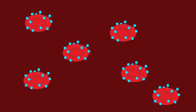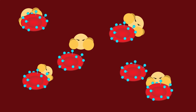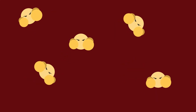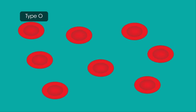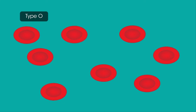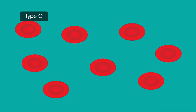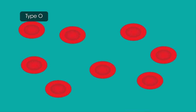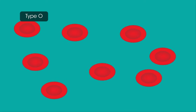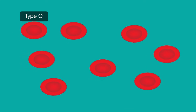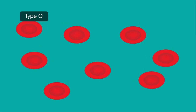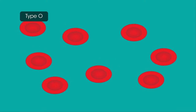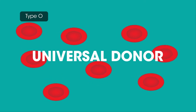Antigens trigger an immune response in which your body tries to get rid of them as it thinks they're foreign and bad. Because blood type O doesn't have any antigens on its surface, this means that when type O is donated to people from other blood groups, the recipient's body doesn't recognize them as foreign and so doesn't try to fight them off. Which is why no-antigen O is the universal donor.